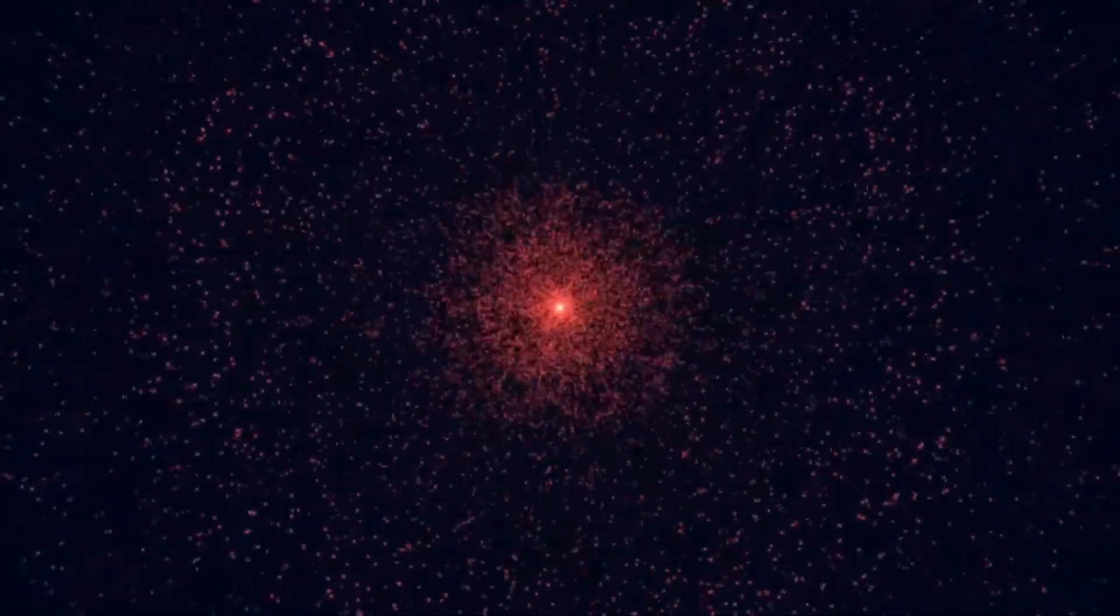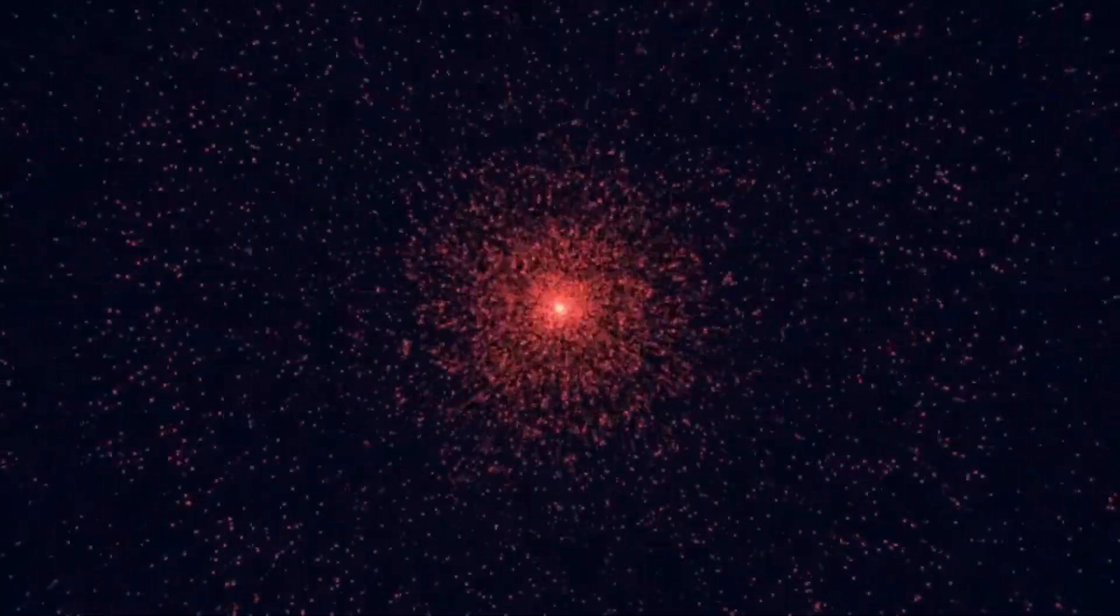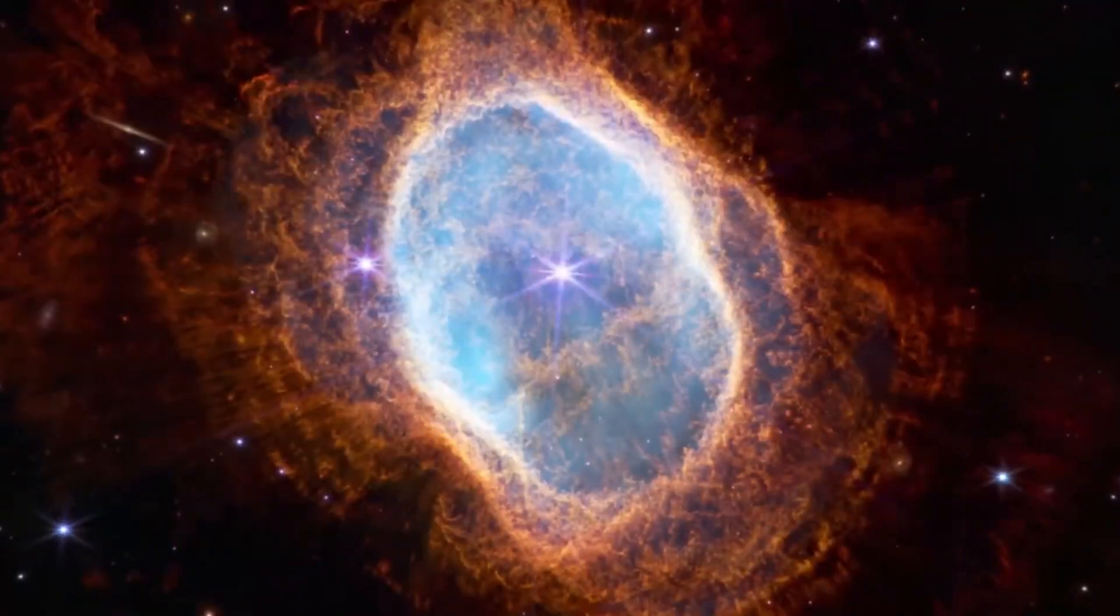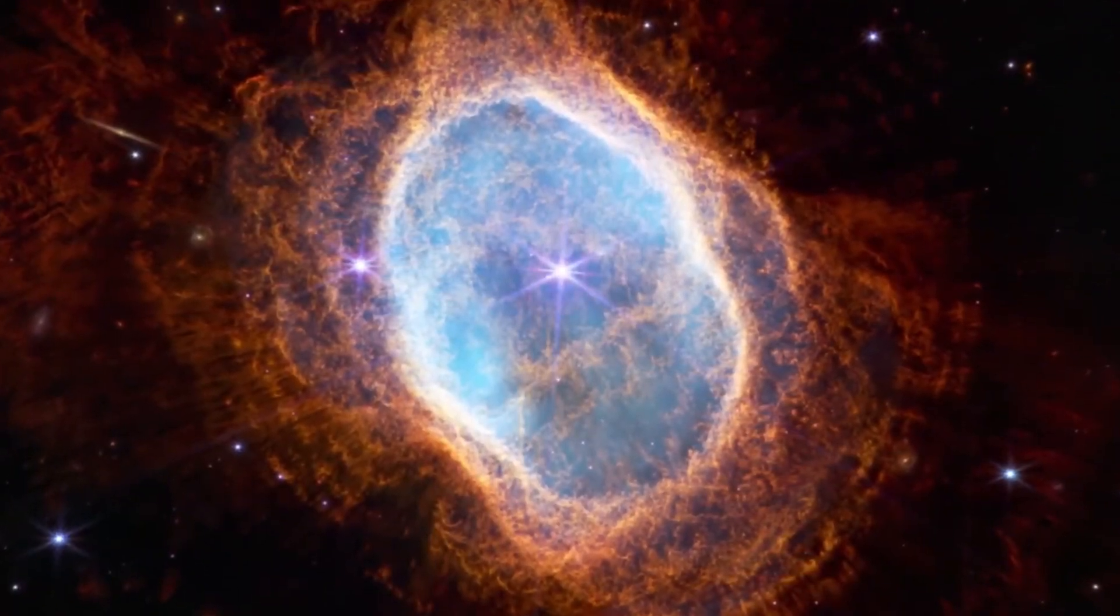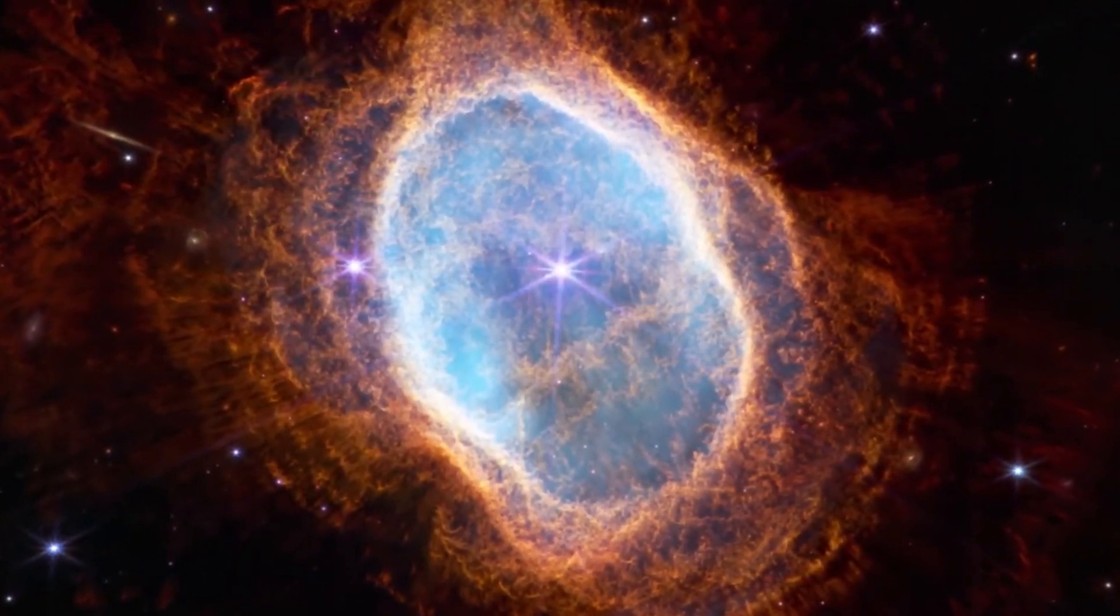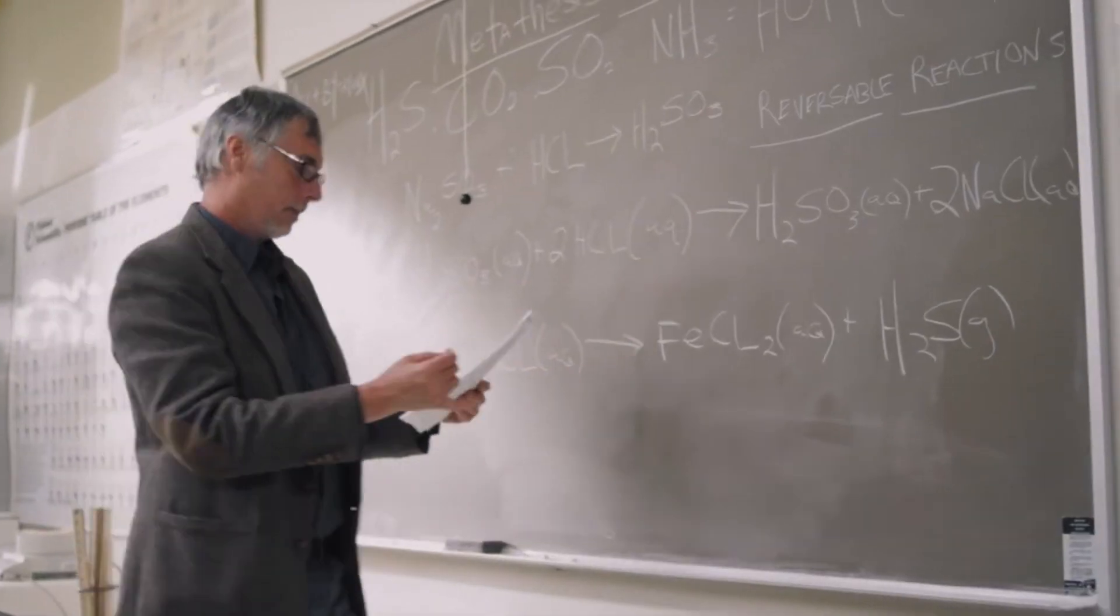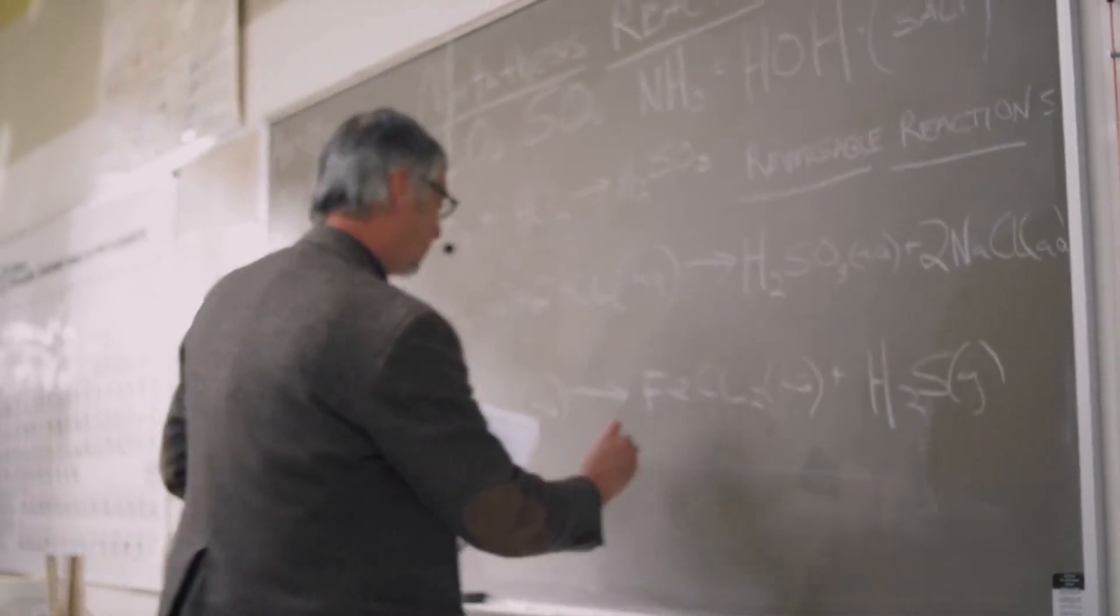Red supergiants like Betelgeuse lose mass at a prodigious rate, shedding large amounts of gas and dust into space. This process is thought to play a key role in the final stages of a star's life, as the loss of mass can affect the star's structure and stability.